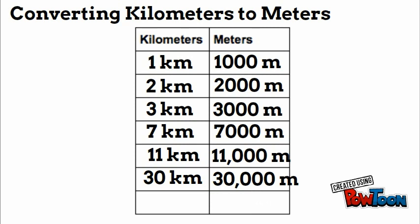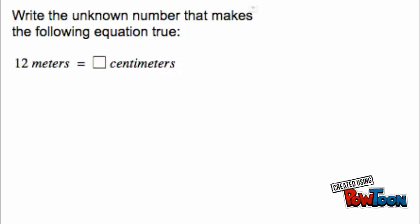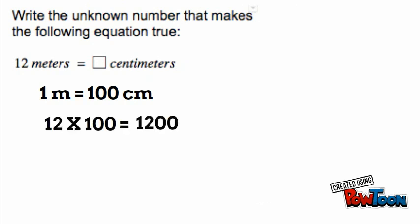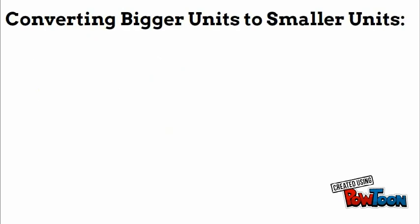Last problem: write the unknown number that makes the following equation true — 12 meters equals blank centimeters. We know there are 100 centimeters per meter, so we do 12 times 100, which gives us 1,200. So 12 meters equals 1,200 centimeters.